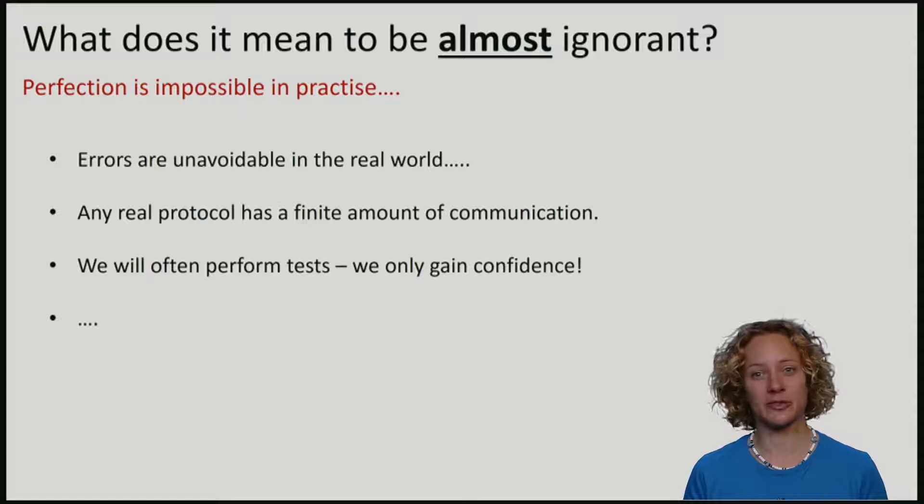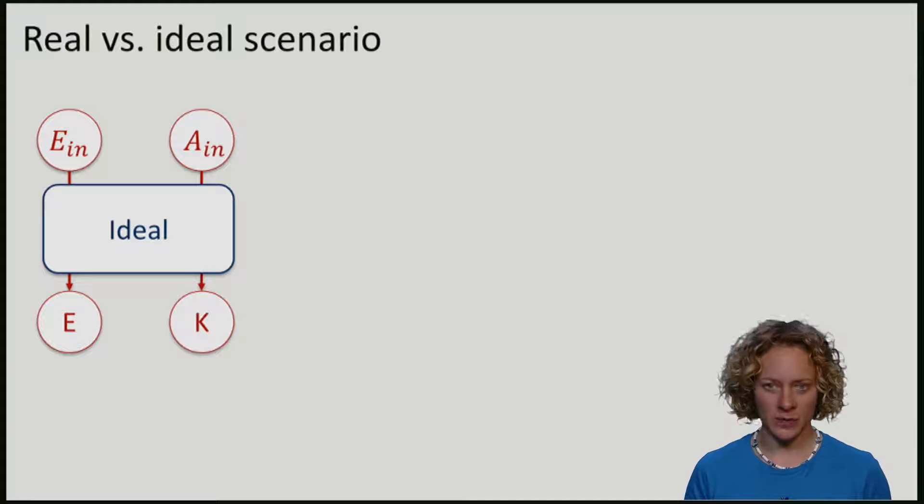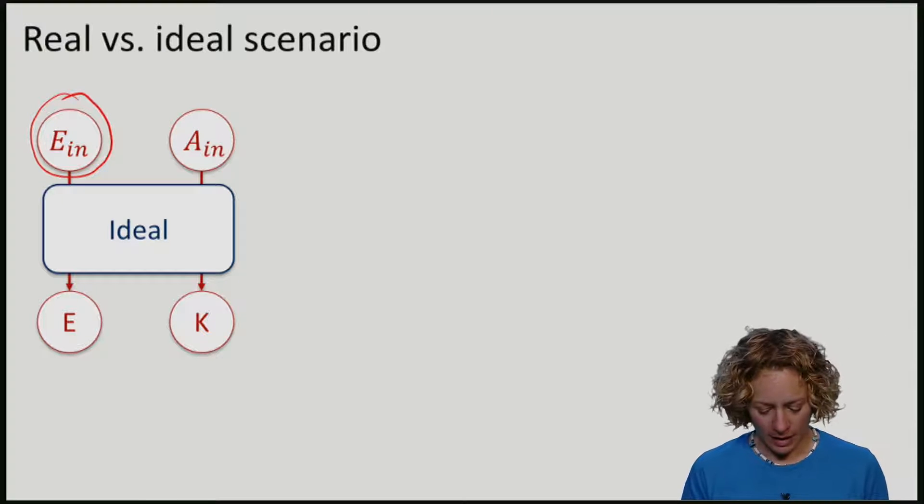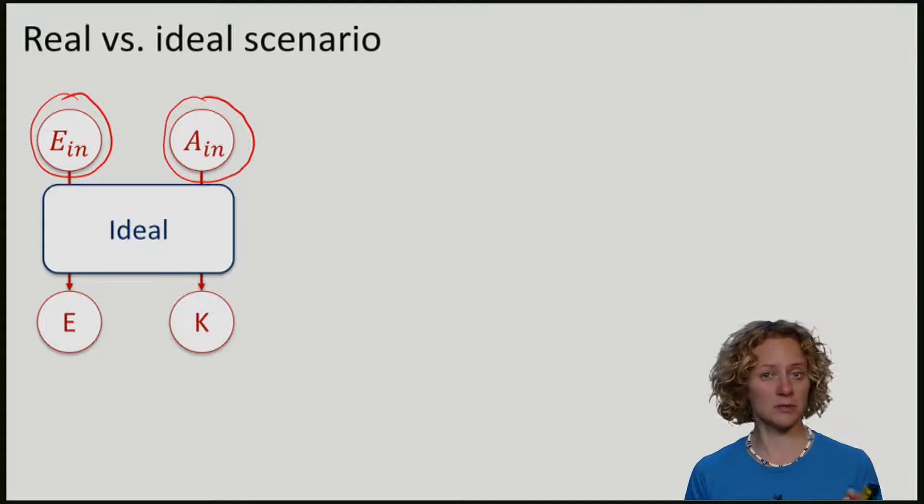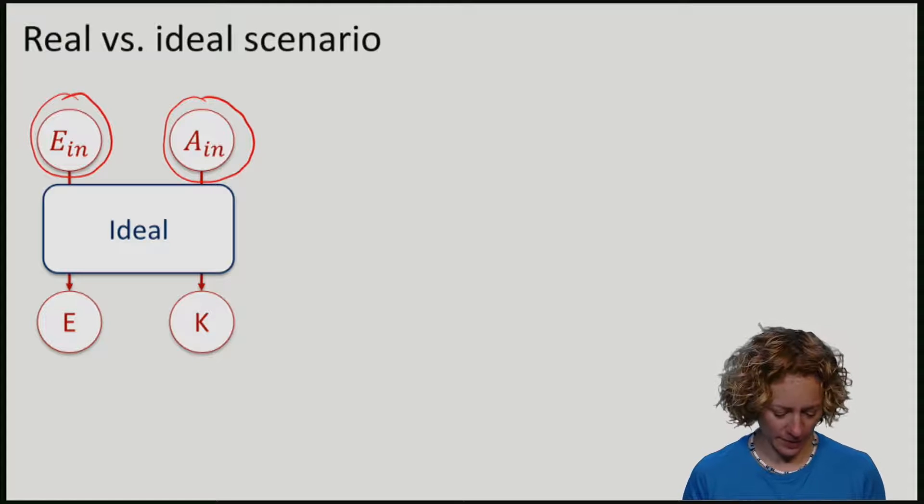Let's consider the real versus the ideal scenario more closely. In the ideal one, our attacker starts with some system, which I'll call iIn, and Alice starts with some system, which I'll call AIn. We run the protocol with some communication back and forth, and during this protocol Eve might gain some information. Let me call her information at the very end of the protocol E.